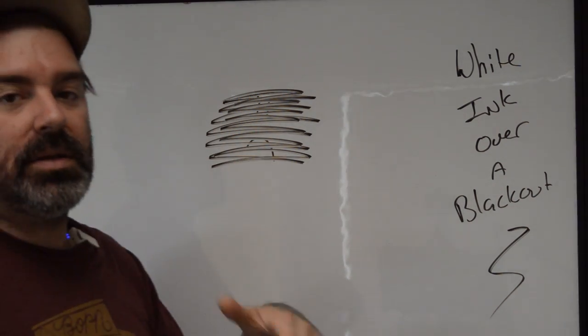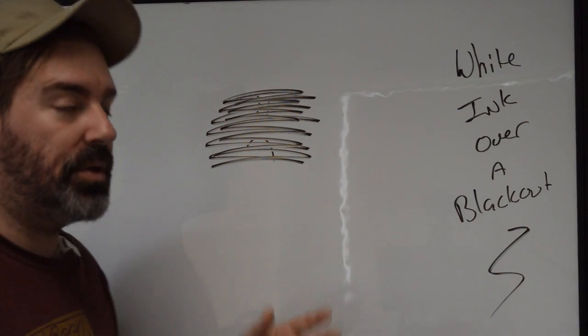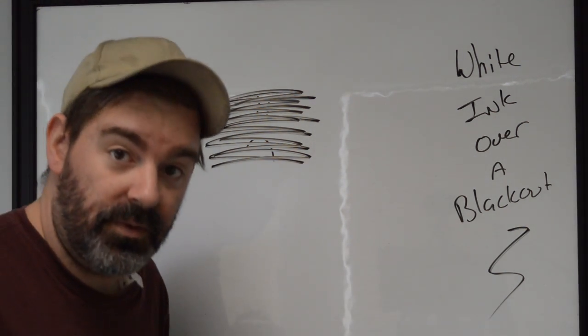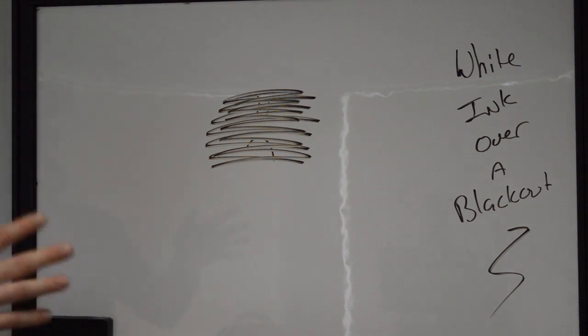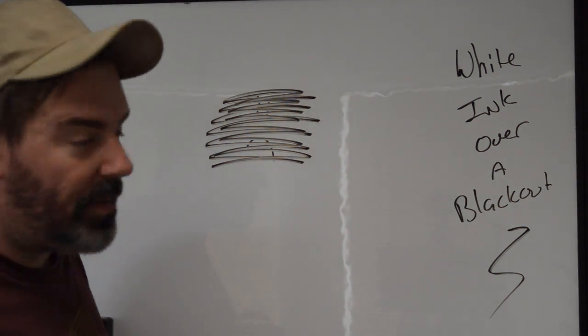So when we do a blackout, a blackout over a black tattoo will result in a blackout. But if you're going over color tattoos, just know that what's there is a very dark version of the colors that are already there. So blackouts defined. What happens when we start tattooing white pigment over top of this?